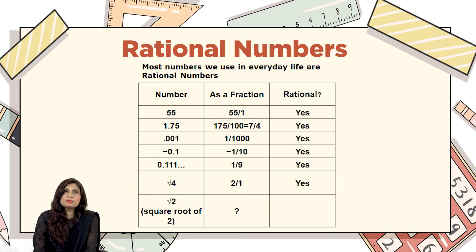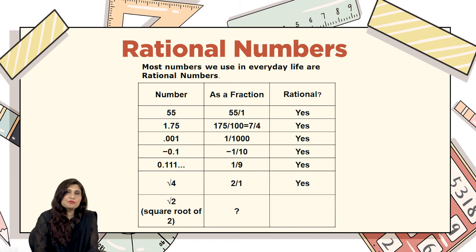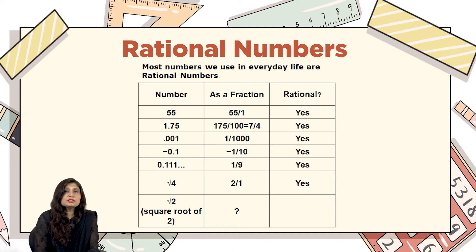Now if you look at the decimal number 0.111, that is a repeating decimal — all repeating decimals can be written in the form of a fraction, so this number can be written as 1/9, and yes, it's a rational number. Now look at the number 4: the square root of 4 is 2, and 2 can be written in the form of a fraction, so it's also a rational number.